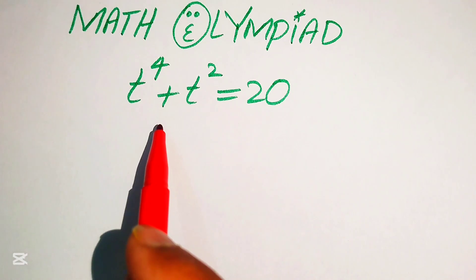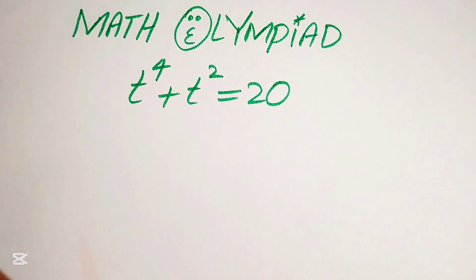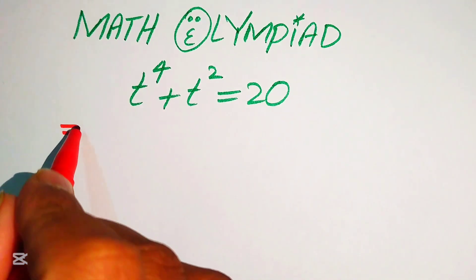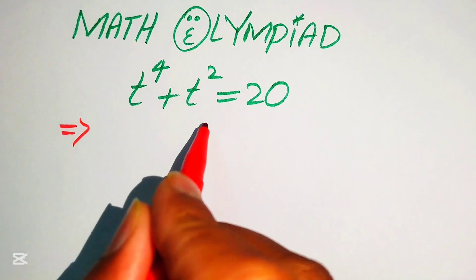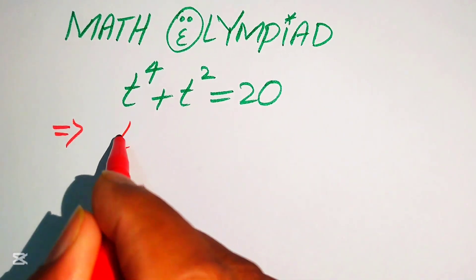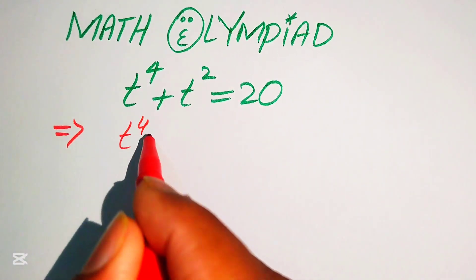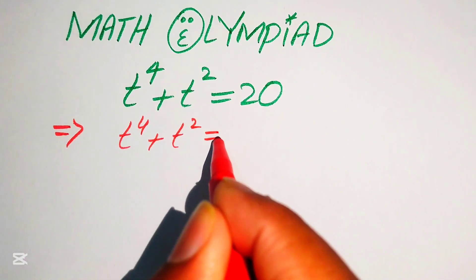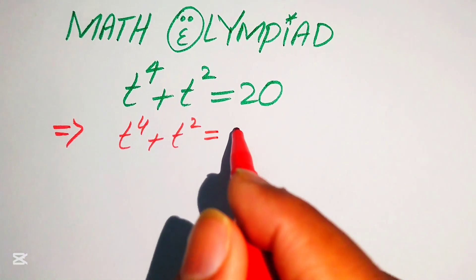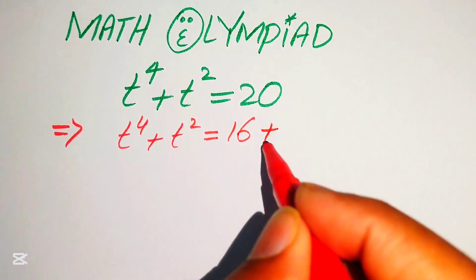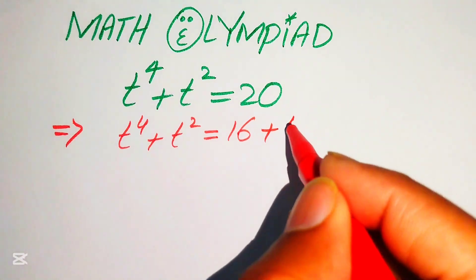This is a fourth order equation, which means it has 4 roots. Now we find all 4 roots of this equation. First, we need to break the right hand side. We rewrite 20 as 16 plus 4.